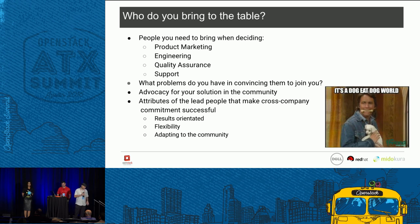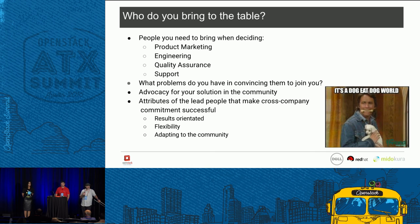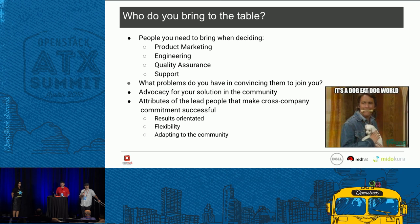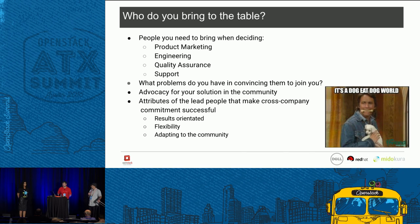This next topic is just as important as tooling and QA cycles: who do you bring to the table? For Dell, I needed product marketing involved to define what we're going to put together and sell; our engineering teams; our quality assurance teams; and most importantly our support teams — because even if we put it out there, if support isn't there, customers are going to have a bad experience at the end of the day.